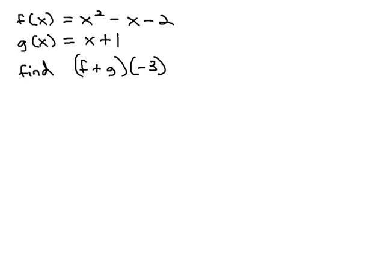We have f(x) = x² - x - 2 and g(x) = x + 1, and we're going to find (f + g)(-3).